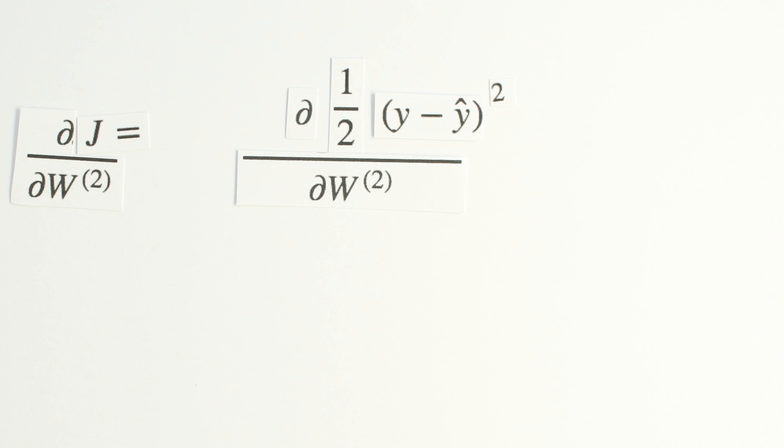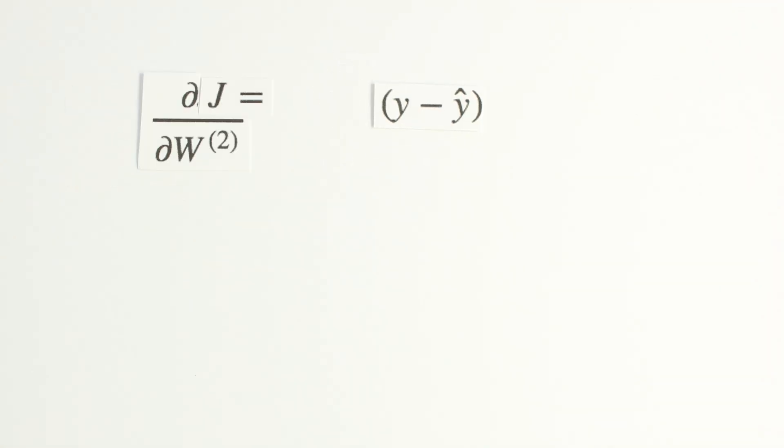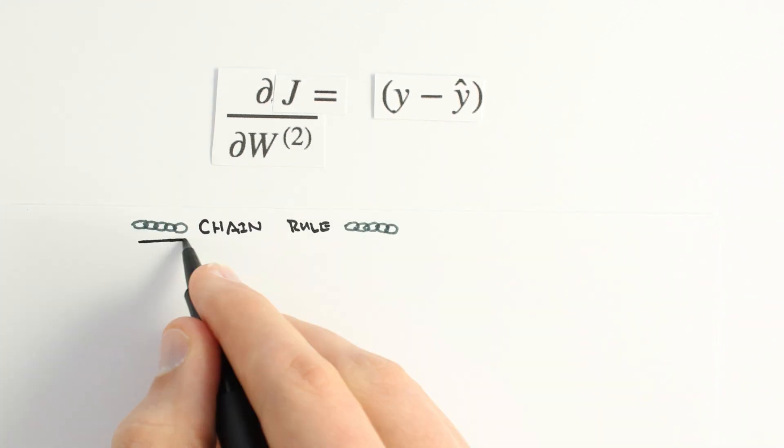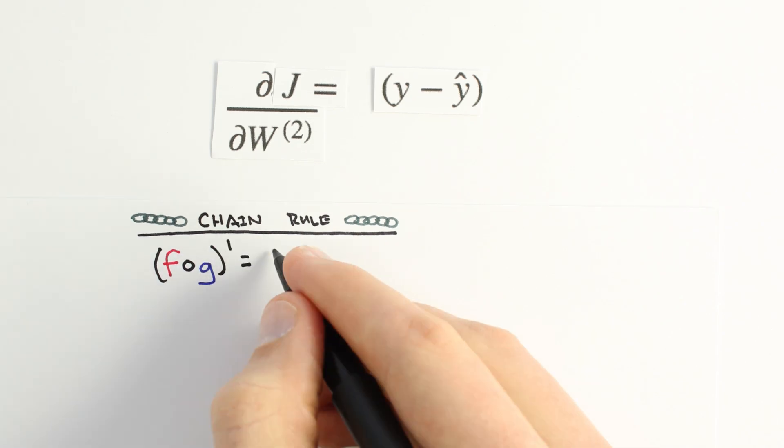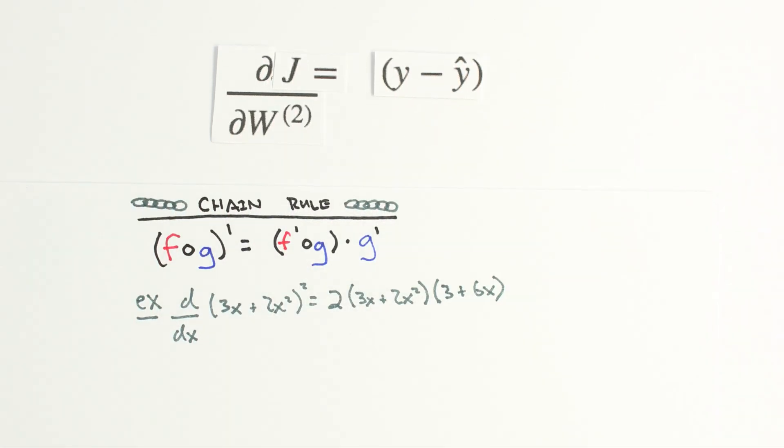We can now evaluate our first derivative. The power rule tells us to bring down our exponent 2 and multiply. To finish our derivative, we need to apply the chain rule. The chain rule tells us how to take the derivative of a function inside of a function and generally says that we take the derivative of the outside function and multiply it by the derivative of the inside function.